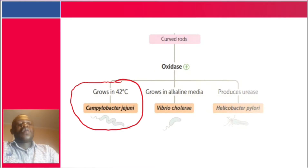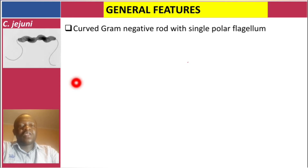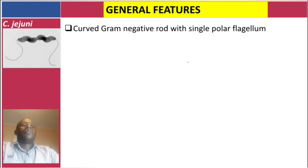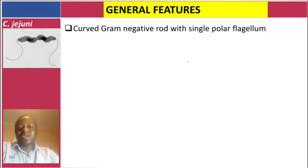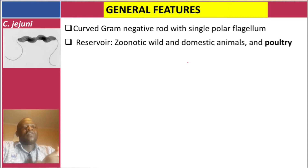Let's start with the general features. Campylobacter jejuni is a curved gram-negative rod with a single flagellum on each pole. You can see a flagellum on this pole and another one on this pole. Sometimes it's only one — be careful. The term 'flagella' is the plural form of 'flagellum.'